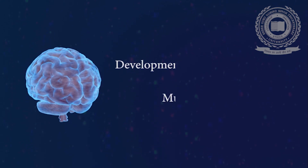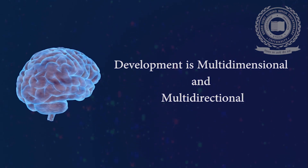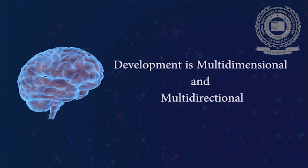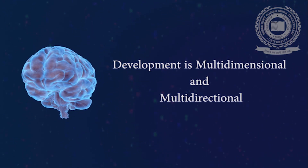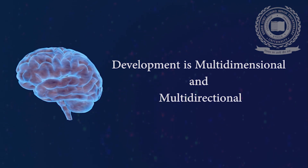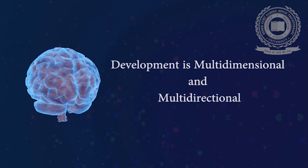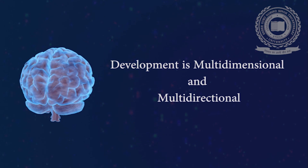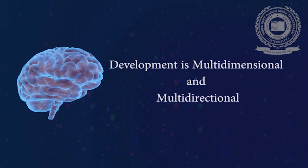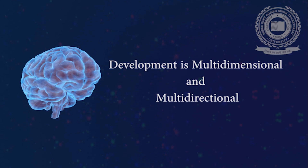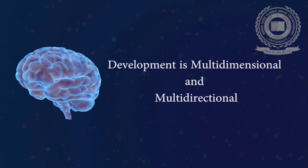Secondly, development is also multidimensional and multidirectional. Multidimensionality refers to the fact that development cannot be described by a single criterion such as increase or decrease in behavior. The principle of multidirectionality maintains that there is no single normal path that development must take. Healthy developmental outcomes are achieved in a wide variety of ways, and development is often comprised of multiple abilities which take different directions, showing different types of change and consistency.